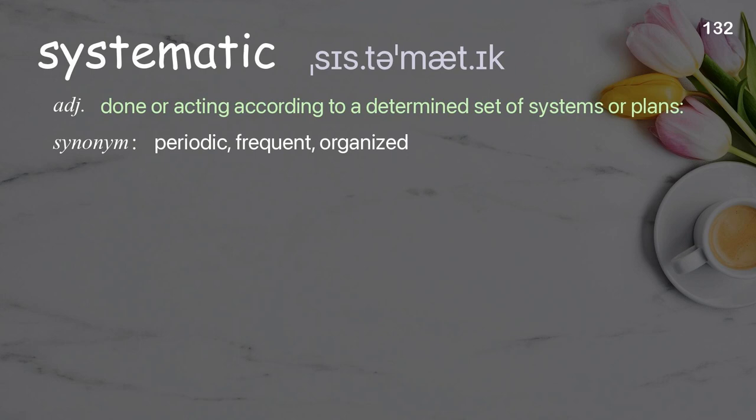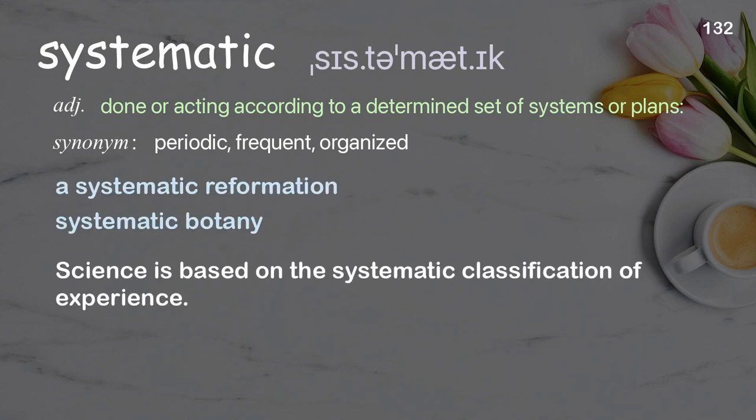Systematic. Done or acting according to a determined set of systems or plans. Examples: a systematic reformation, systematic botany. Science is based on the systematic classification of experience.